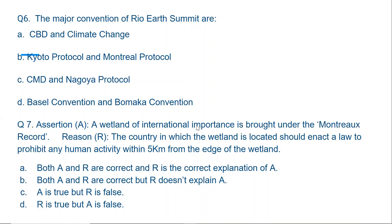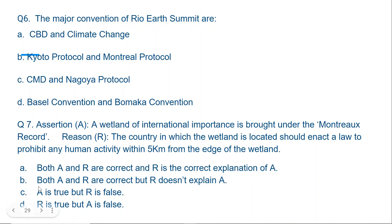Question number seven — Assertion and Reason: Assertion A: A wetland of international importance is brought under the Montreux Record. Reason R: The country in which the wetland is located should enact a law to prohibit any human activity within 5 km from the edge of the wetland. The assertion is correct — a wetland of international importance is brought under the Montreux Record. However, the reason is wrong because human activity is not banned; industrial activity is banned within 5 km of the wetland edge. So the answer is C: A is true but R is false.